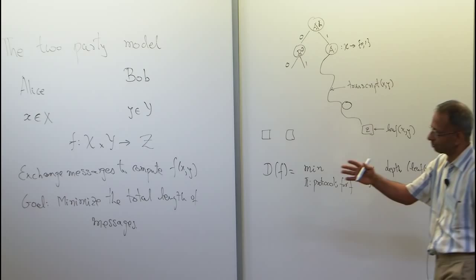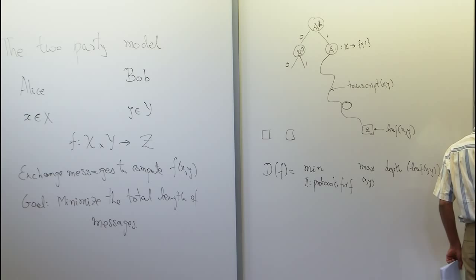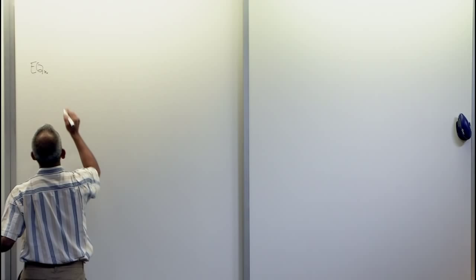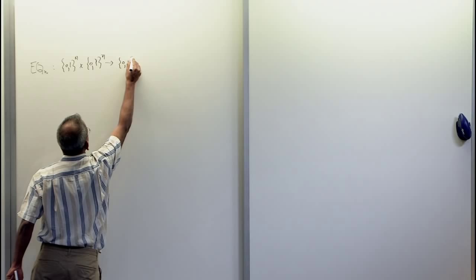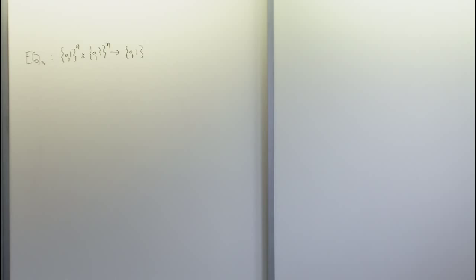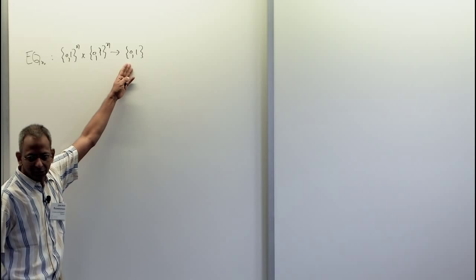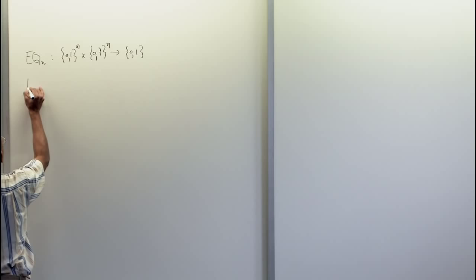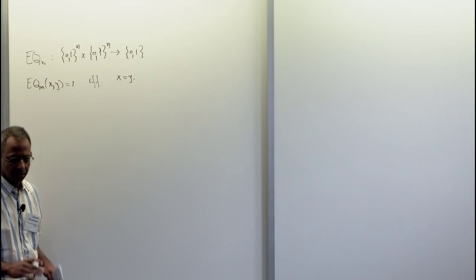I want to give some examples of functions that can be analyzed. The first function I want to think about is the equality function. Capital X is the set of all n-bit strings, and capital Y is the set of all n-bit strings. The output they wish to compute is just a single bit — they need to determine if x is equal to y or not.